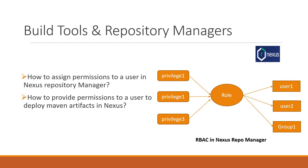Nexus uses a concept of role-based access control to provide permissions to users. It has the concept of privileges and roles. Privileges are nothing but the permissions, and a role is a group of privileges. So when we want to assign some permissions to users, we have to create a role which will group the required privileges and assign that role to a particular user.